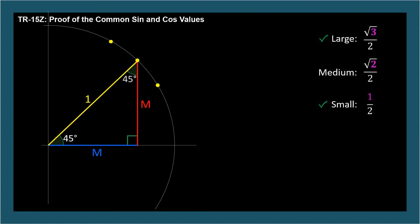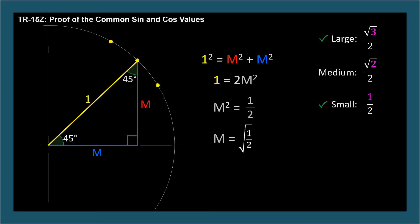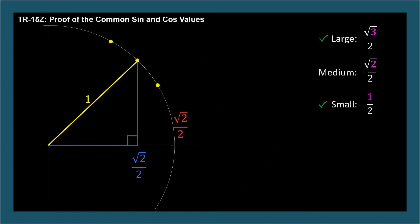Using the Pythagorean theorem again, we get 1 squared equals m squared plus m squared. Simplifying, we get 1 equals 2m squared. To isolate the variable m, divide both sides by 2. Rearranging, we get m squared equals 1 half. So m equals square root of 1 half. We distribute the radical to numerator and denominator and simplify to get m equals 1 over square root of 2. Well, this is numerically correct, but your instructor will almost certainly not allow you to keep a radical in the denominator. To rationalize the fraction, we multiply numerator and denominator by the square root of 2 to get square root of 2 over 2, which is the value of the medium number.